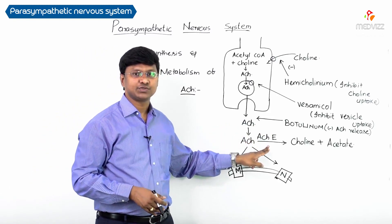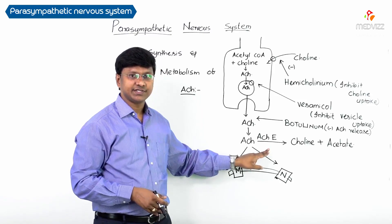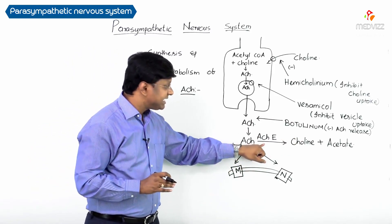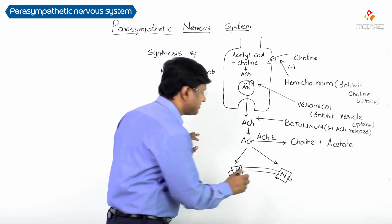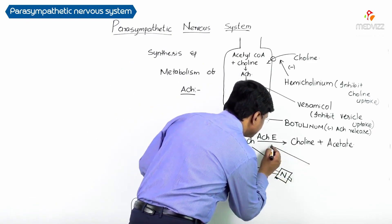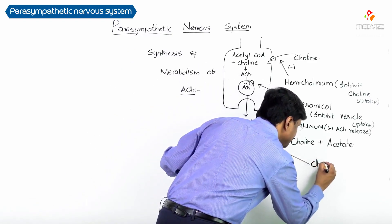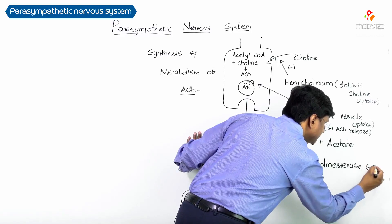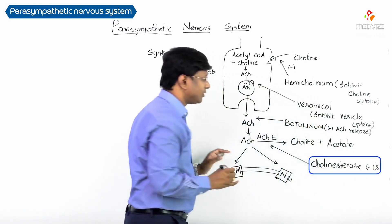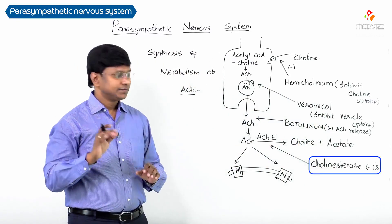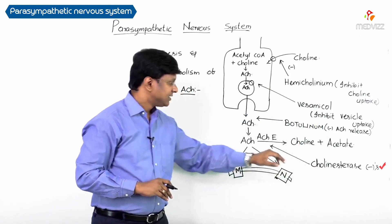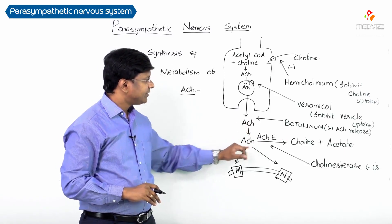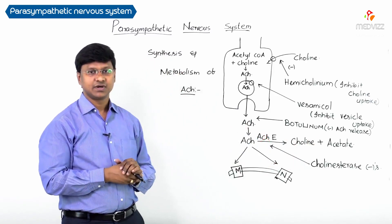Once acetylcholine is released, it is metabolized in the presence of acetylcholinesterase into choline plus acetate. We have a group of drugs called cholinesterase inhibitors, which inhibit acetylcholinesterase and thereby prevent acetylcholine from being metabolized.